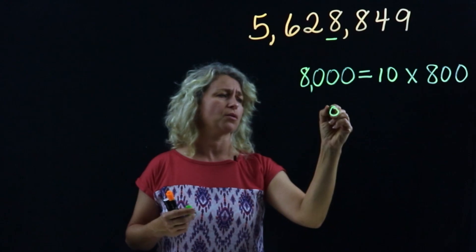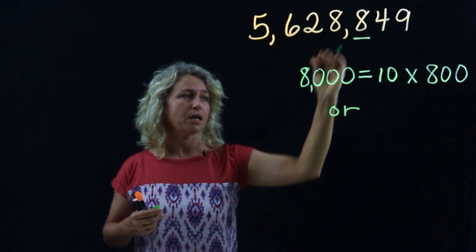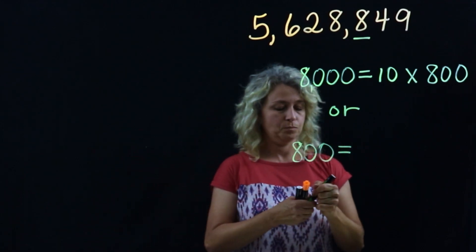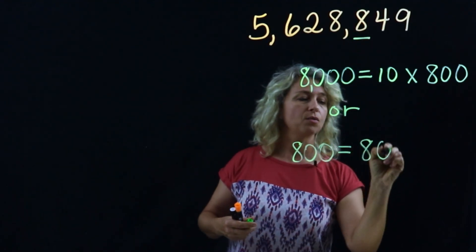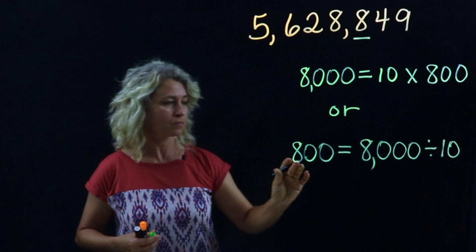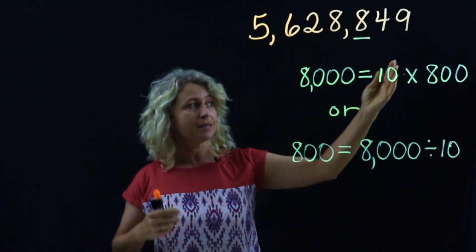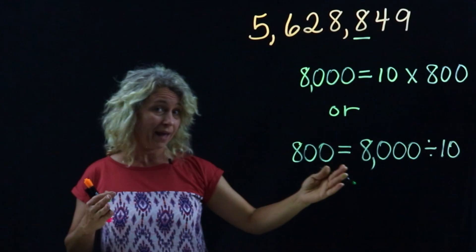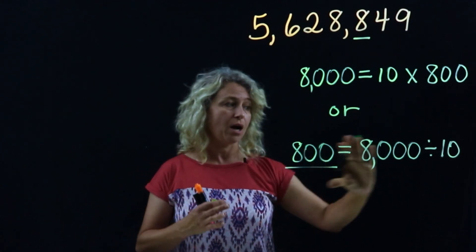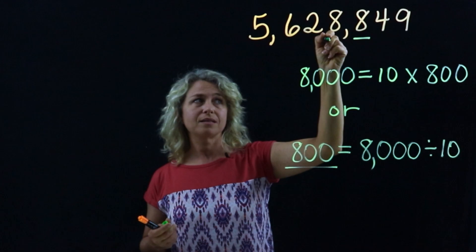Now let's say this in reverse. Let's look at the 800. Eight hundred is eight thousand divided by ten. With division, it's the opposite of multiplication — we add a zero for multiplication but take away a zero for division. So eight thousand take away a zero is eight hundred. This confirms that eight hundred is one tenth of eight thousand.